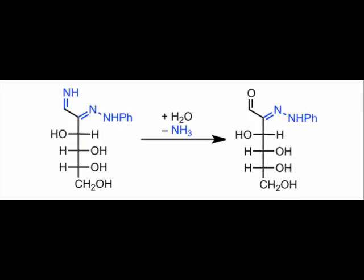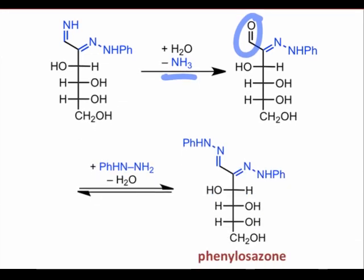Imine hydrolysis, which is the reverse of imine formation, gives an aldehyde and gaseous ammonia, yet another side product. Finally, the third equivalent of hydrazine condenses with the aldehyde to reestablish the terminal hydrazone group. The mechanism of this hydrazone formation is identical to the mechanism of the first hydrazone formation that we saw.